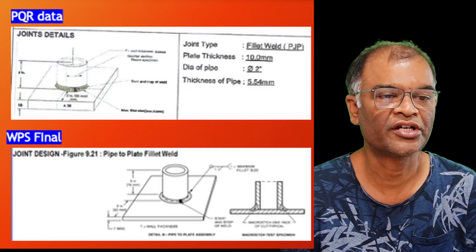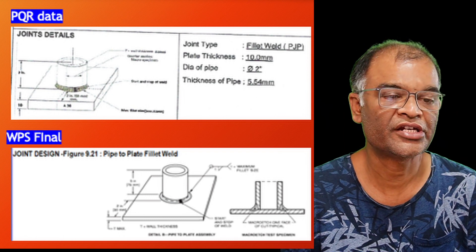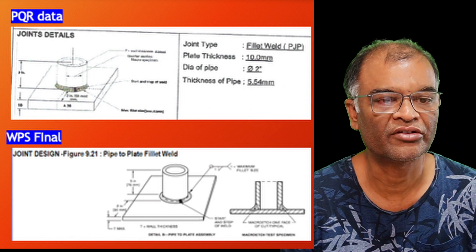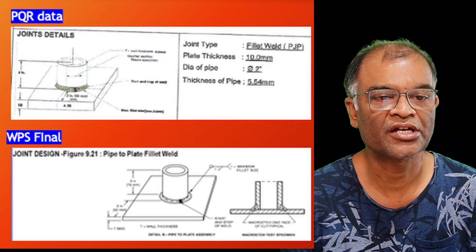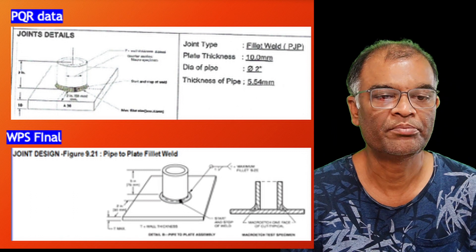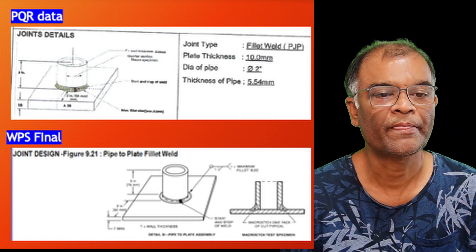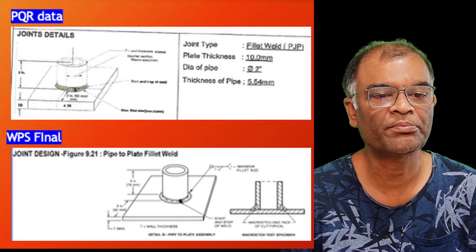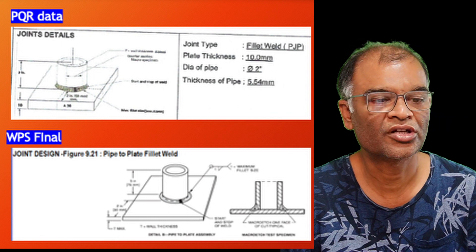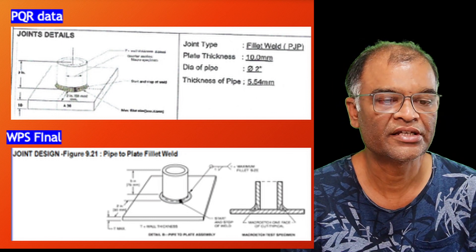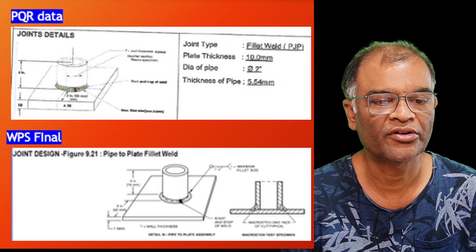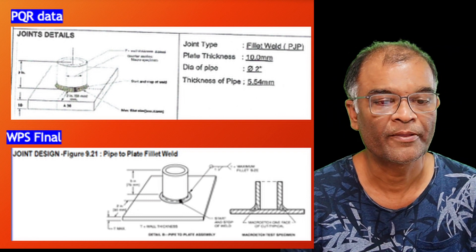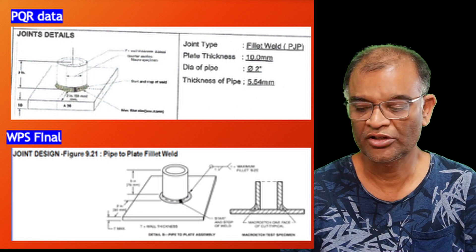For the joint design from the PQR data, the plate is horizontal and the pipe sits vertically on it, and we weld all-around fillet welds. The joint type is fillet weld PJP, plate thickness is 10 mm, pipe diameter is 5.2 inches, and pipe wall thickness was 5.54 mm. The WPS picture is taken directly from AWS D1.1, showing the pipe-to-plate assembly with two views.